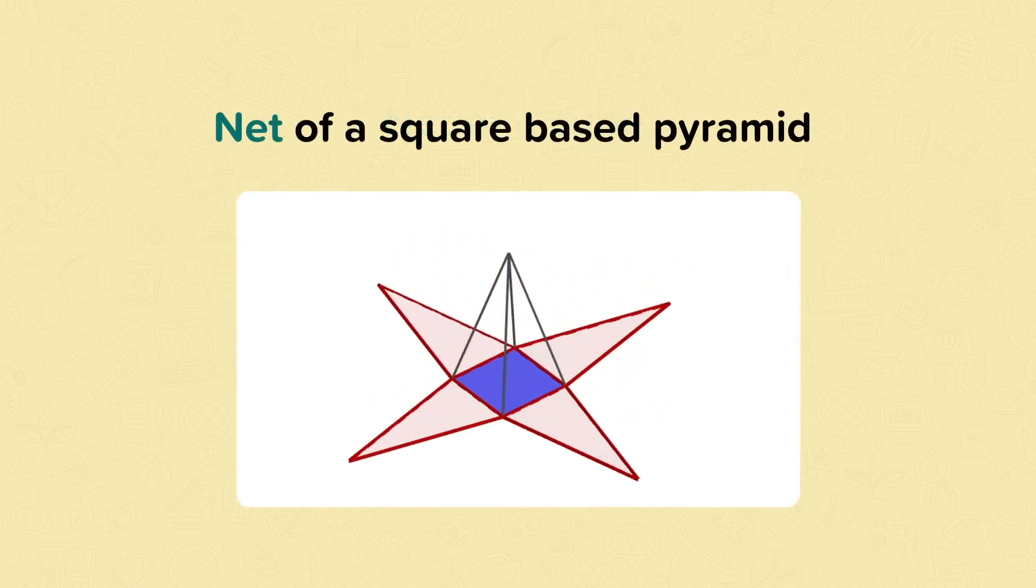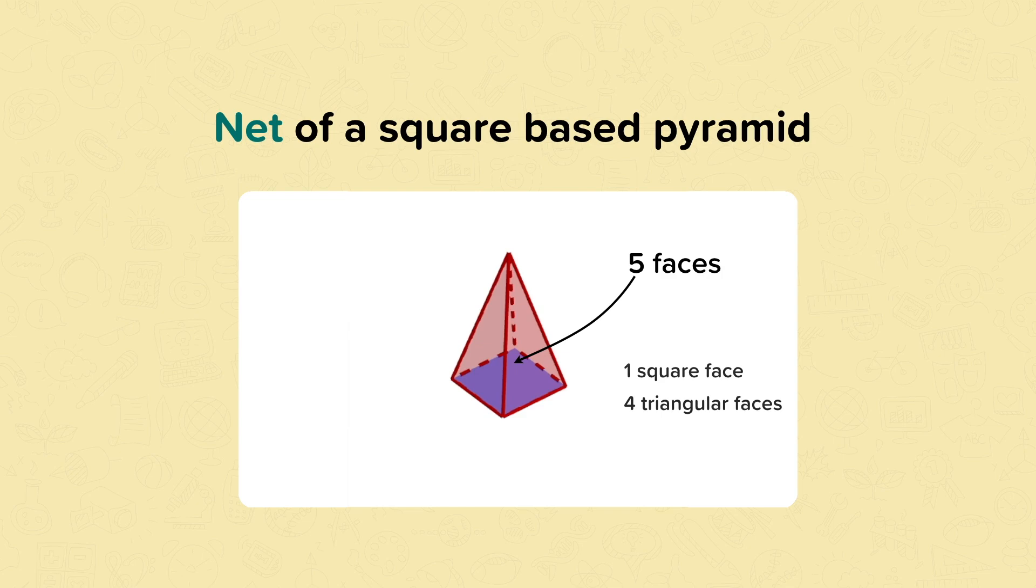This is the net of a square-based pyramid. The net shows that a square-based pyramid has five faces. It has one square face and four triangular faces.